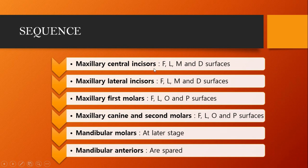The sequence in early childhood caries is: maxillary central incisors, then the laterals, maxillary first molars, then the canine and second molars, and then only mandibular molars at the later stage. Mandibular anteriors are spared because of the protective action of the saliva and because the tongue protects the mandibular anteriors from the acidogenic fluid.